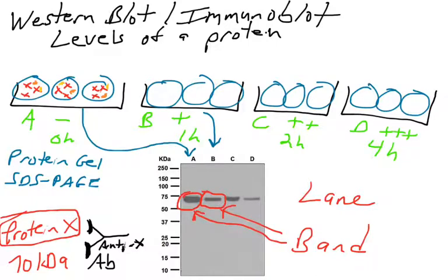You look at the amount of darkness or blackness of a band — more intense means more protein X, a thinner or lighter band means less protein X. So you can say that in sample B there is less protein X than in sample A. Key terminology: we call these marks bands and we talk about the intensities of bands. More intense bands mean more protein; less intense bands mean less protein.